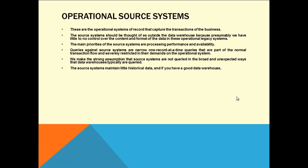The source system maintains little historical data. If you have a good data warehouse, the source system can be relieved of much of the responsibility for representing the past. As an example, if you go to an ATM, the online transaction processing system can give you only information about the last 6 or 10 transactions at max — it has only partial history. If you say 'I want the first transaction when I opened the account,' the ATM cannot print that. Even at the bank, they will order a statement — they cannot print a statement older than 6 months. There is a limit for the operational source system, it will store only last 6 months or 1 year of data.